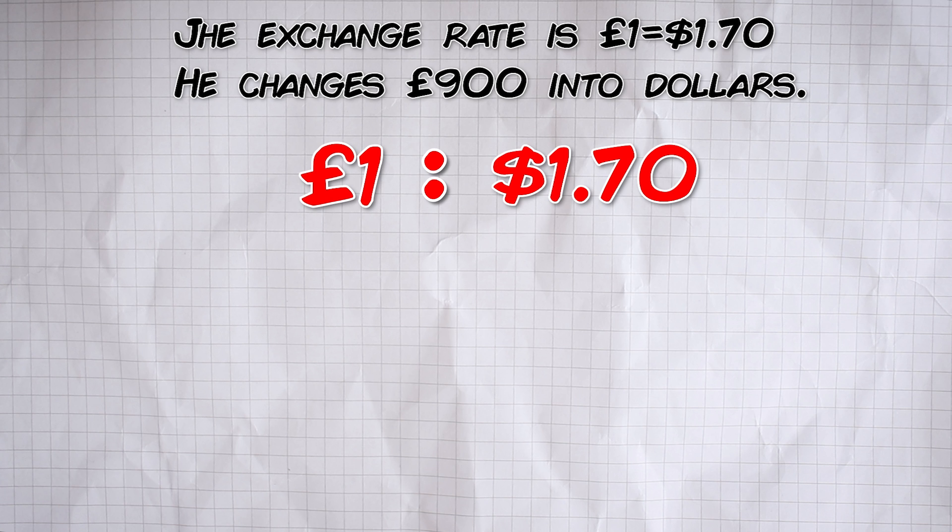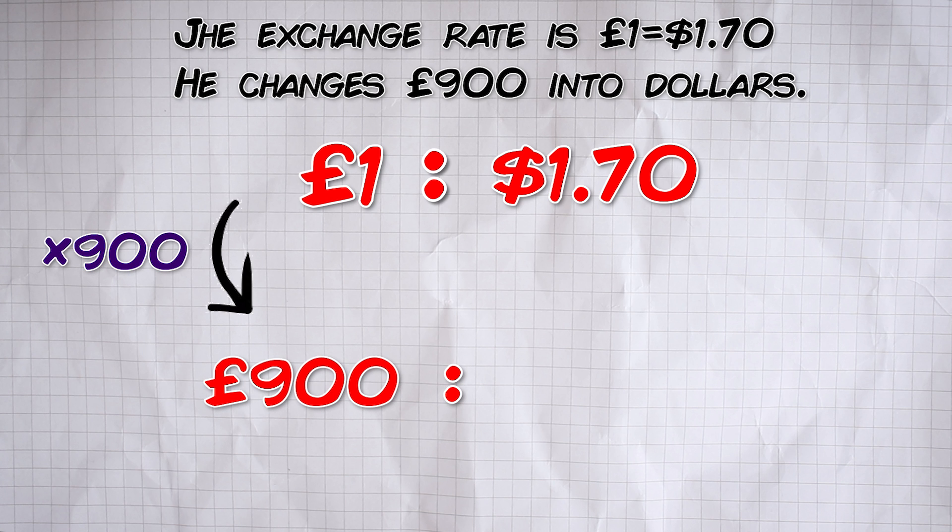To get to £900 we just have to multiply by 900. We've got £1 but we want to get to 900. But to keep our ratio in the same proportion we must multiply that right hand side by 900 too. The dollar side must mirror exactly what we did on the pound side.